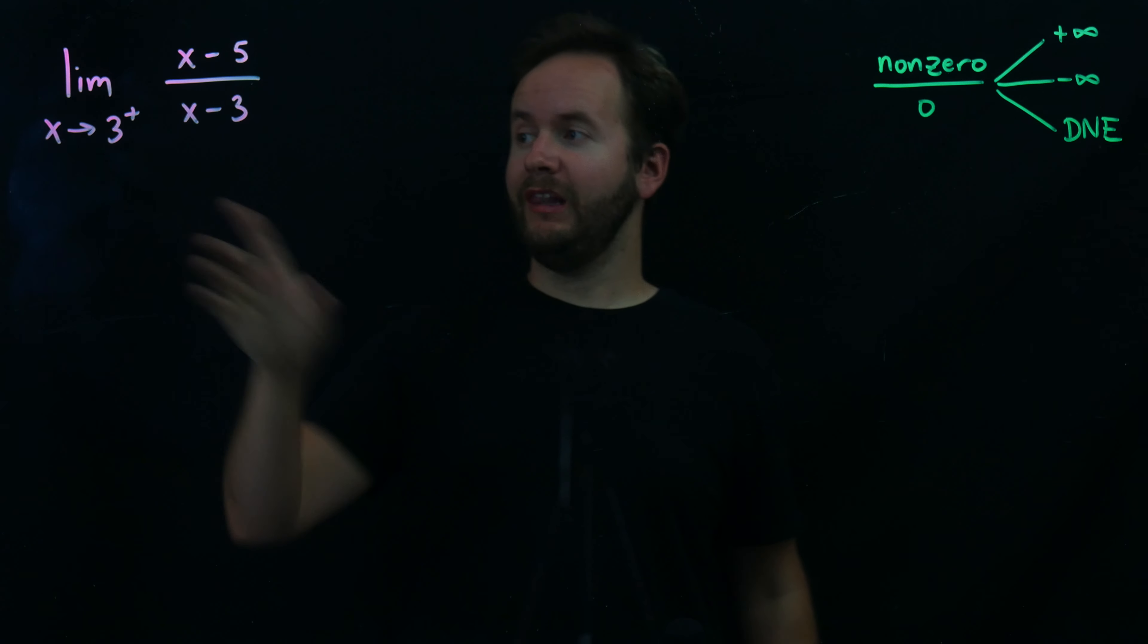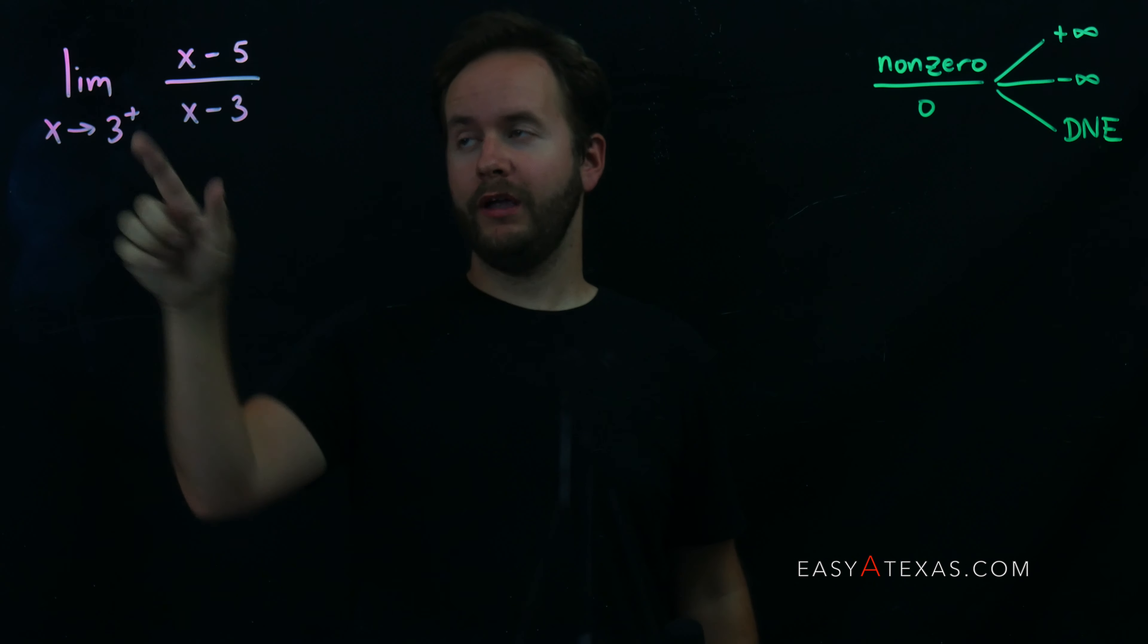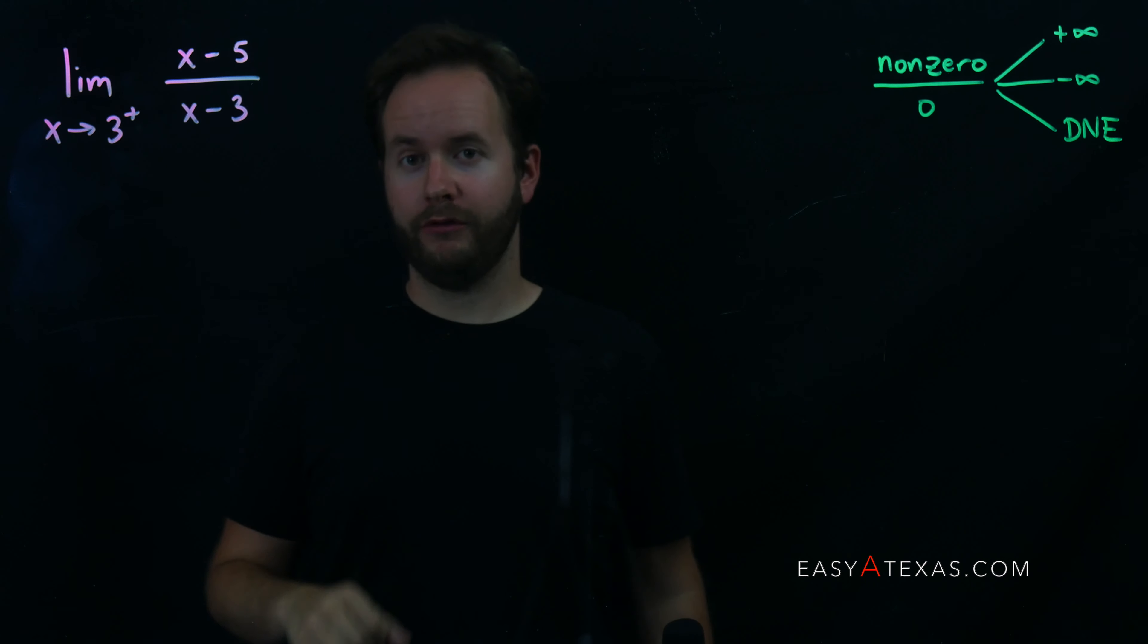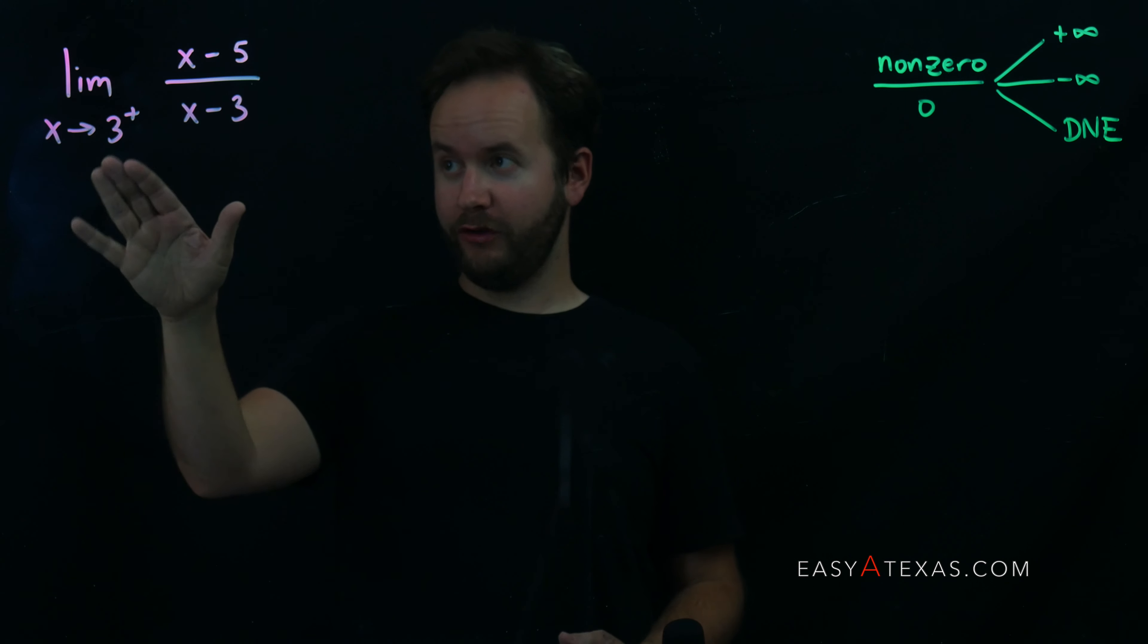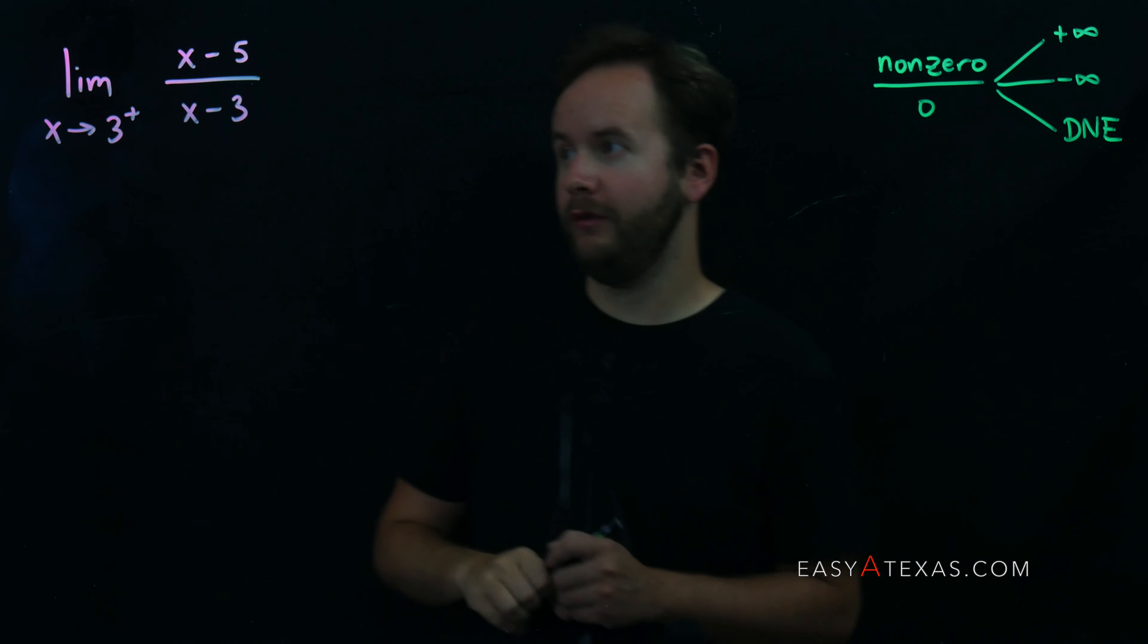This is a one-sided limit. Here we have the limit as x approaches 3 from the right of x minus 5 over x minus 3. With 99% of limits, your job is to just take the value of x that you're told to approach and just plug it into the limit. Let's see what happens when we do this.